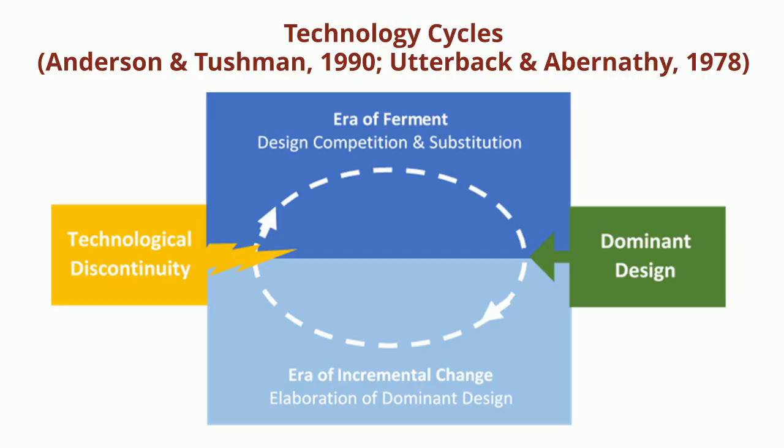This leads to our second pattern: technology cycles. Anderson and Tushman and Utterback and Abernathy showed that technology often flows in a cycle. First, a technological discontinuity will usher in an era of ferment, where designs will compete for dominance. Once a dominant design has emerged, we enter the era of incremental change, where many firms are competing to improve the dominant design.